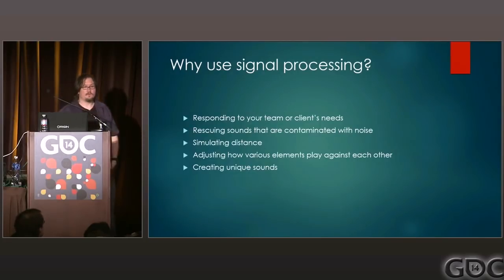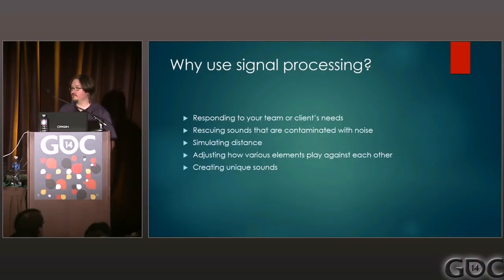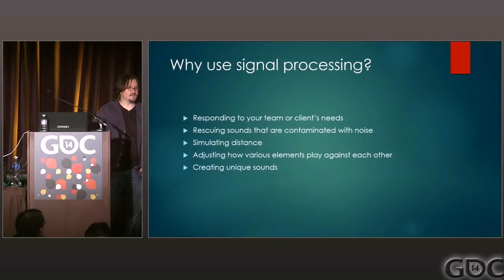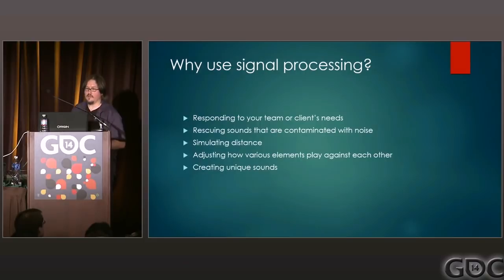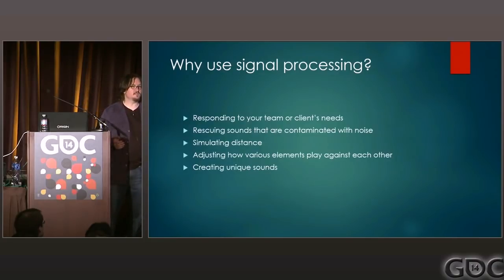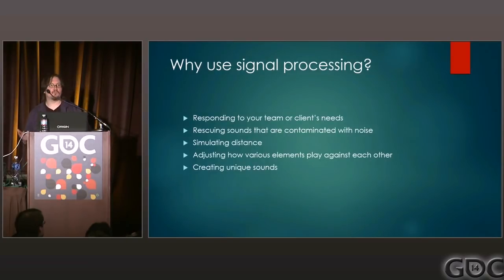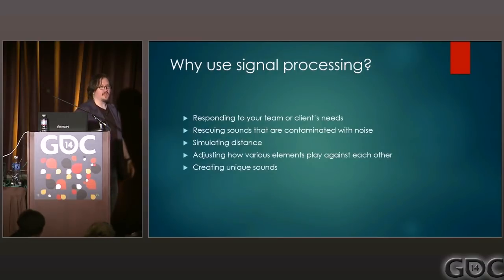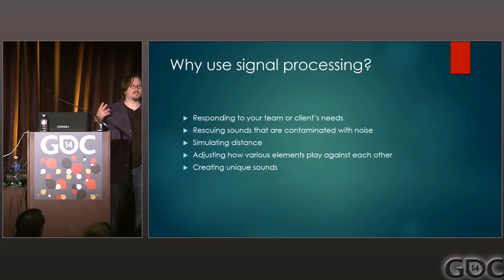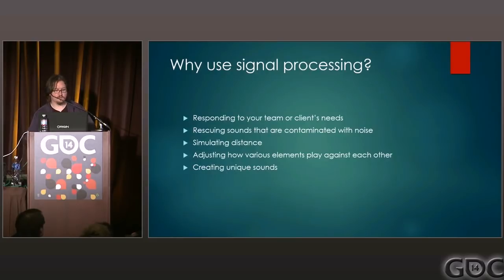Why do we use signal processing? One great use is to respond to the team or the client's needs, depending on whether you are in-house or a vendor. Sound design and game design is an iterative process: you make things, put them in the game, see how it all works together, discuss it, and get feedback. Having a command of digital signal processing lets you respond to those needs. You might get a comment to make something brighter, crunchier, deeper, or bigger. If you can translate those adjectives into EQ or dynamics adjustments, you don't have to start over from scratch.